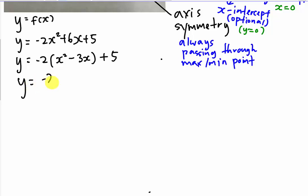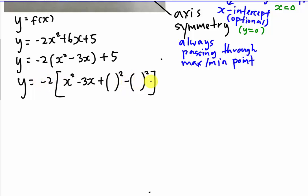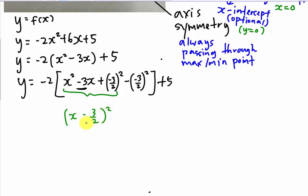The next step is to divide b by 2. Here b corresponds to the x-term. The first and second terms are copied, and then you add (b/2) squared and subtract (b/2) squared, then close the bracket — closing the bracket is important because later you multiply negative 2 into it. So inside the bracket, b over 2 will be negative 3 over 2. You combine those three terms into (x minus 3 over 2) squared. The remaining term is negative (negative 3 over 2) squared, which stays as negative 9 over 4, plus 5.